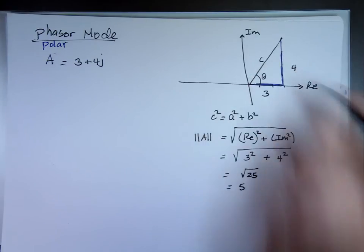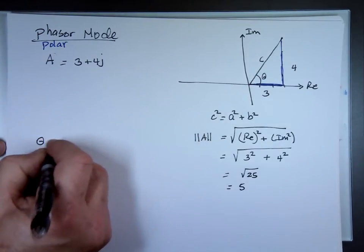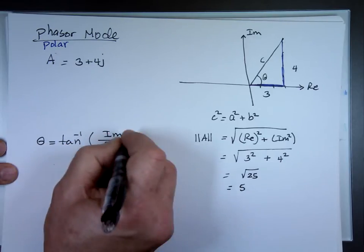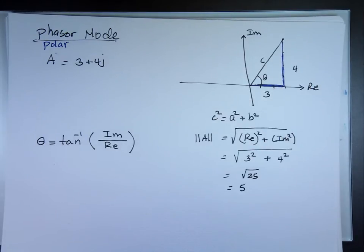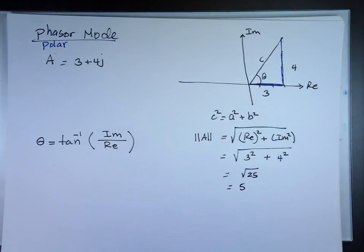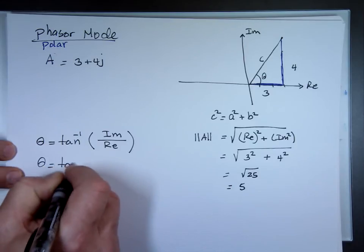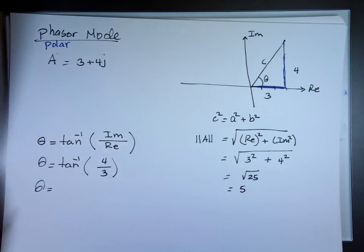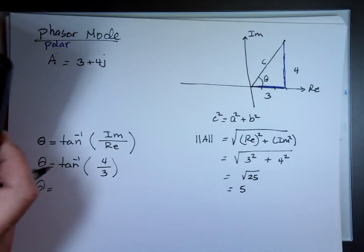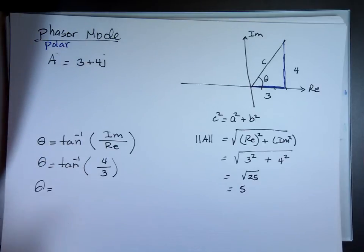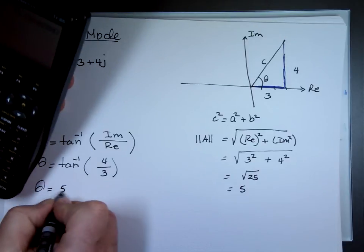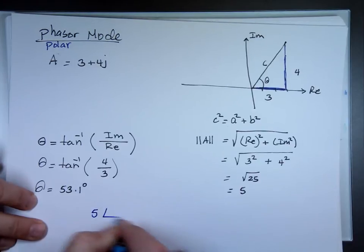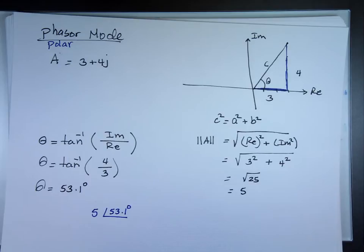Now, how do you figure out what the angle theta is? Theta will be the inverse tangent of the side that's opposite — which is the imaginary — over the real. The opposite over the adjacent. My opposite side is the imaginary side; my adjacent one is the real side. So theta will be the inverse tangent of 4 divided by 3. Going to my calculator, it doesn't matter what mode you're in — degree or radian. Inverse tangent of 4 divided by 3 gives 53 degrees.